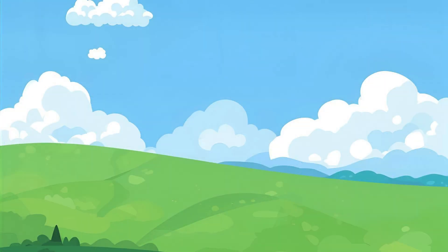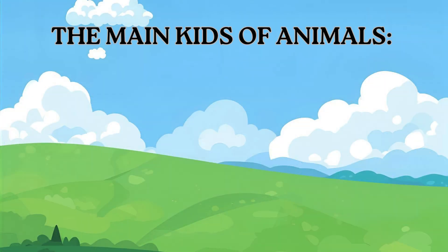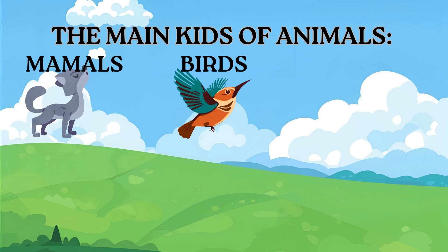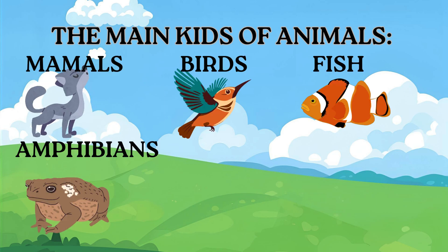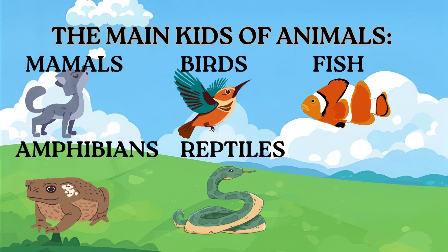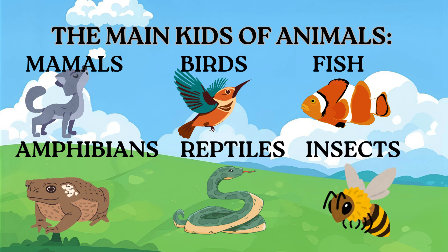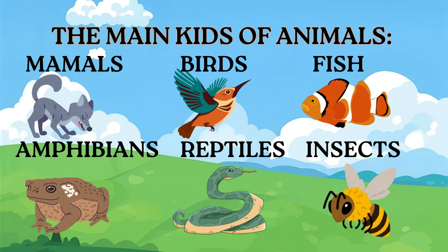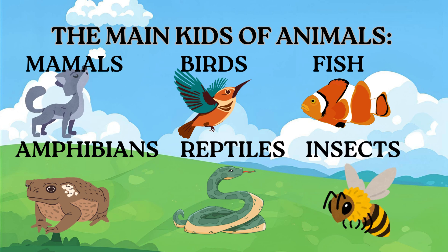So remember, the main kinds of animals are mammals, birds, fish, amphibians, reptiles, and insects. Every animal is special in its own way.